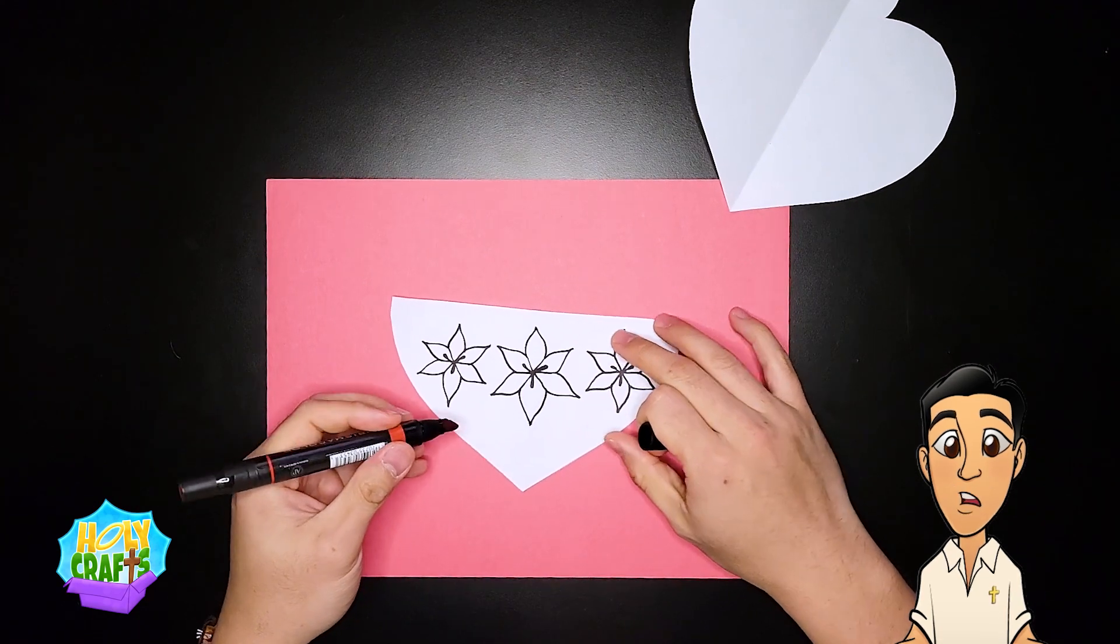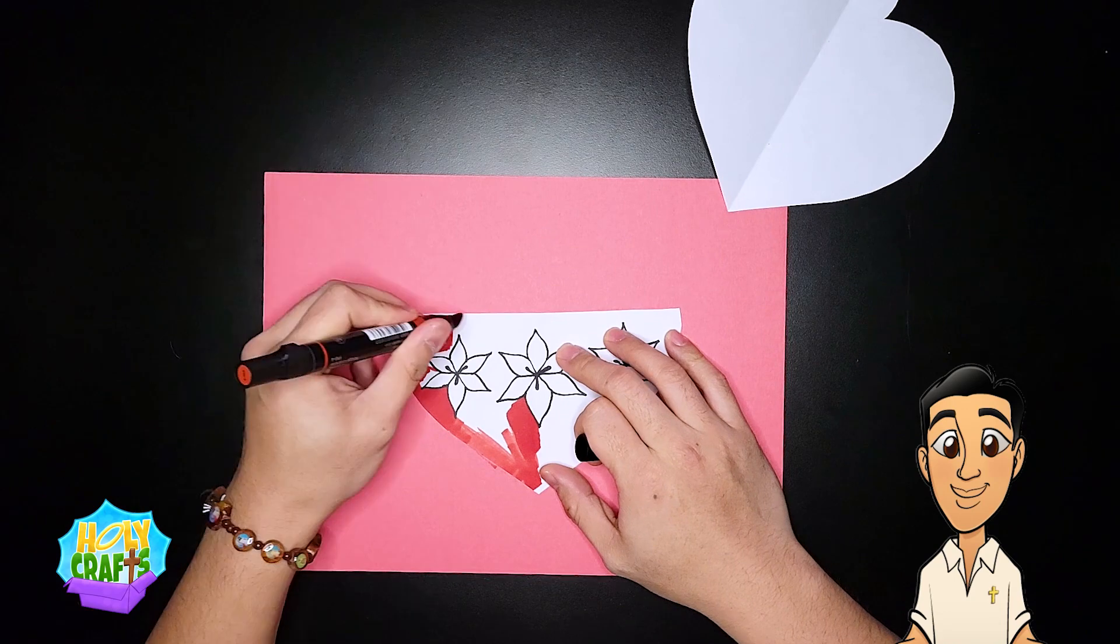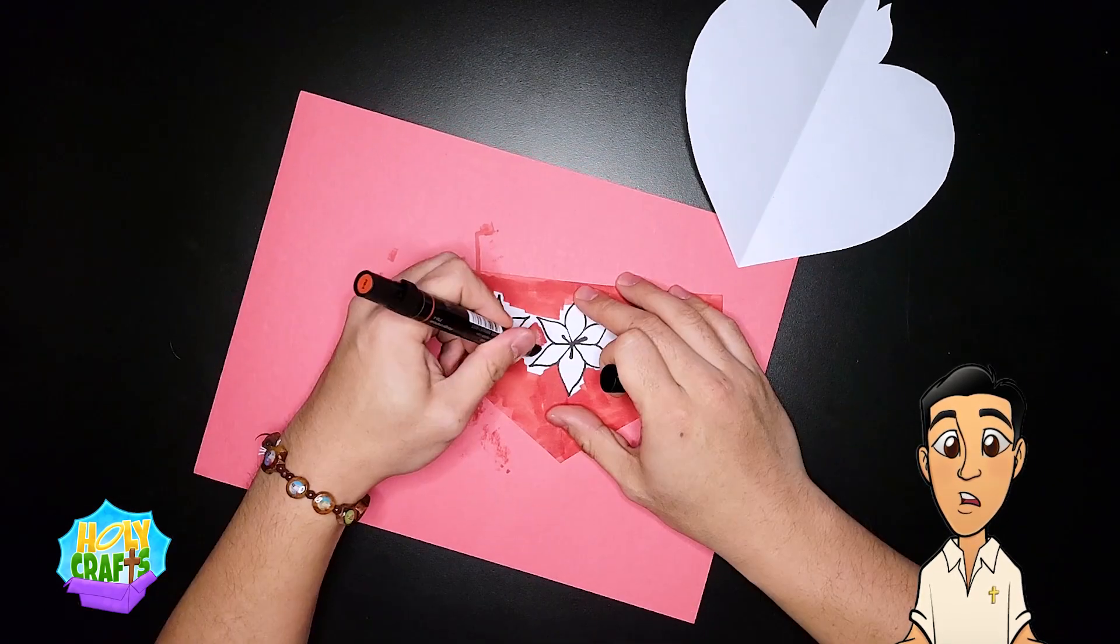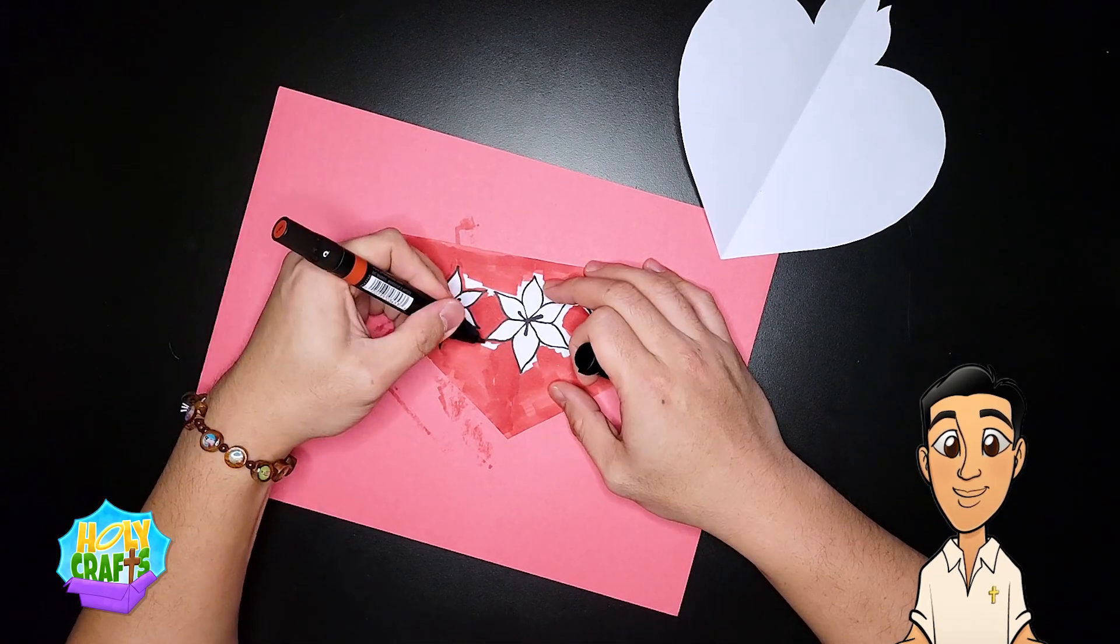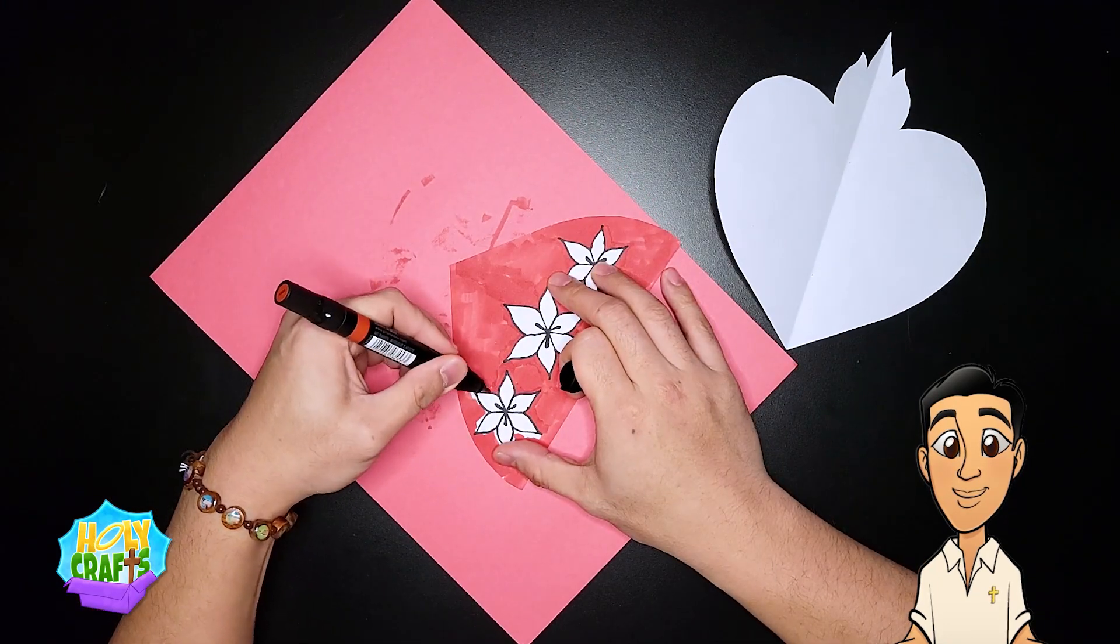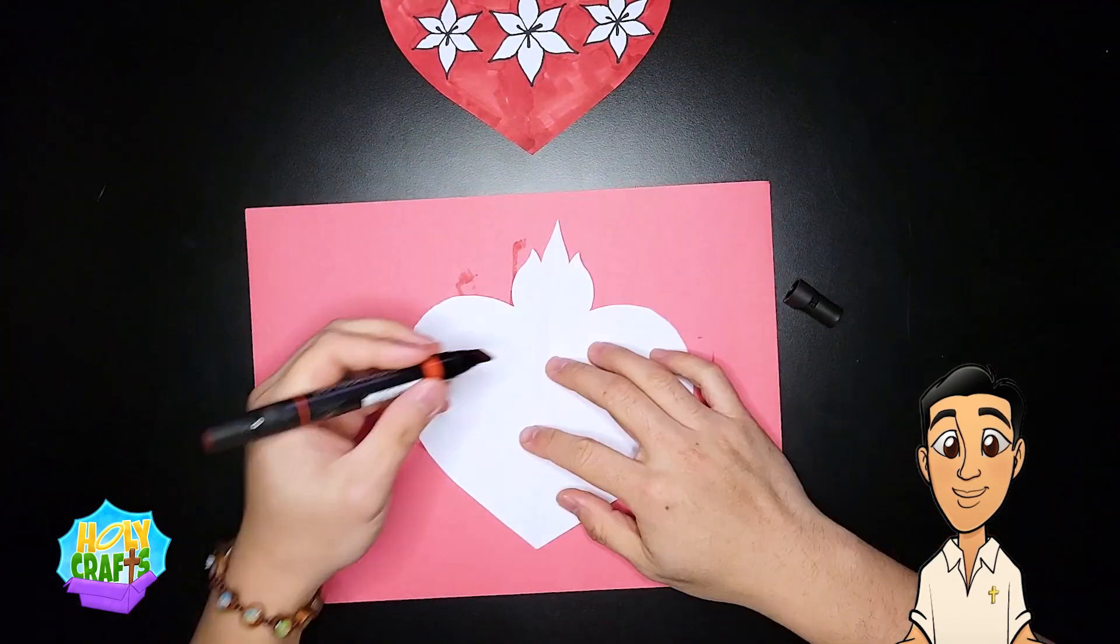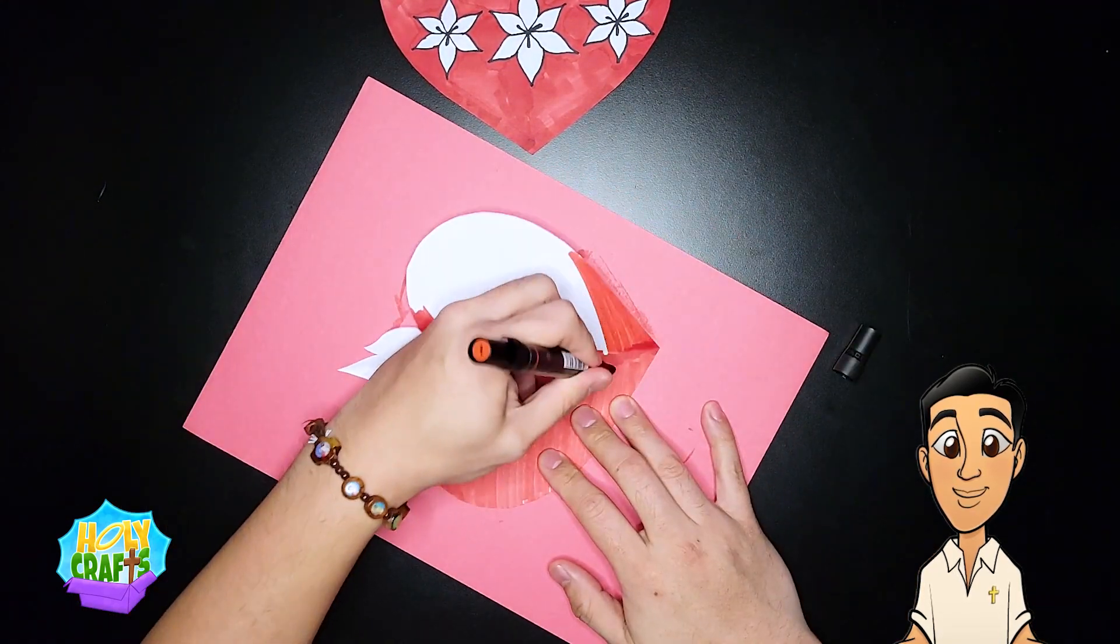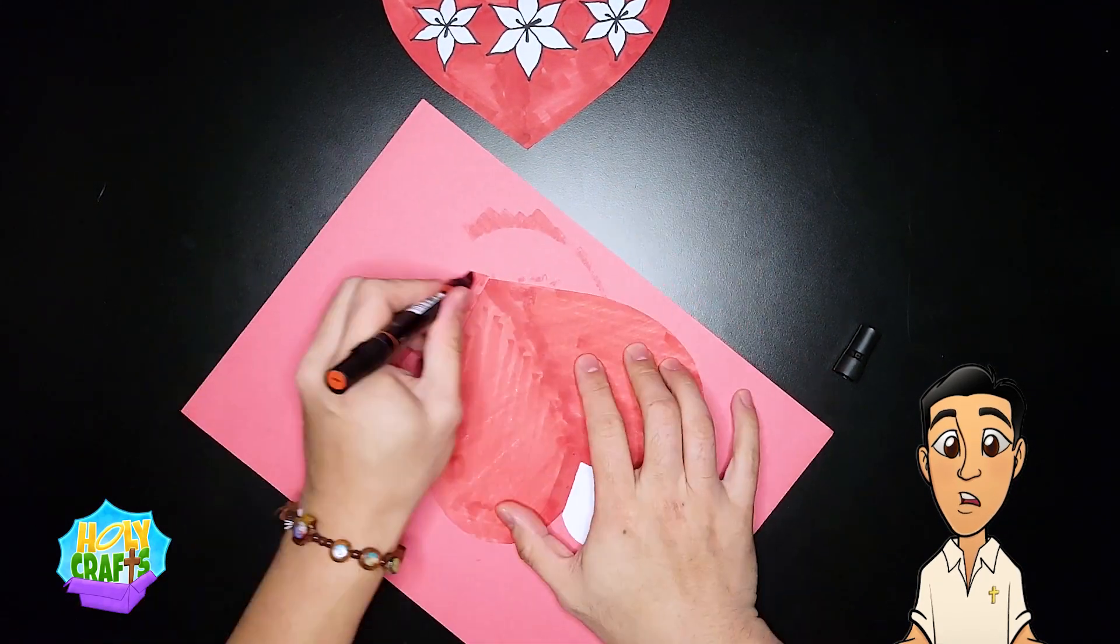Now that we're done with the drawing part, it's time for the coloring part. Go ahead and get your crayons or markers. And let's color the chaste heart of St. Joseph. I'm going to use a lot of red for the heart.